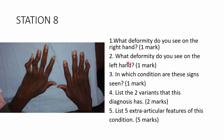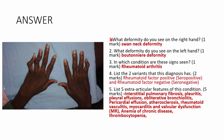Station 8 — similar to season 1 episode 1. On the right hand you see a swan neck deformity; on the left hand a boutonnière deformity. The condition is rheumatoid arthritis. It has two main variants: seropositive (rheumatoid factor present) and seronegative (rheumatoid factor absent).